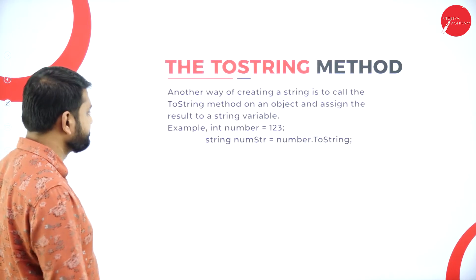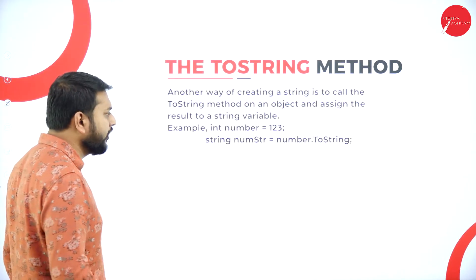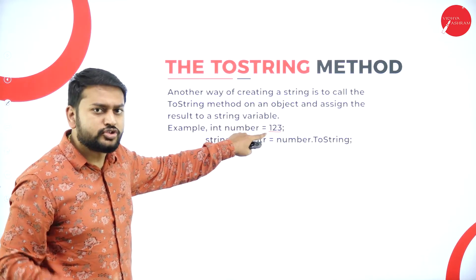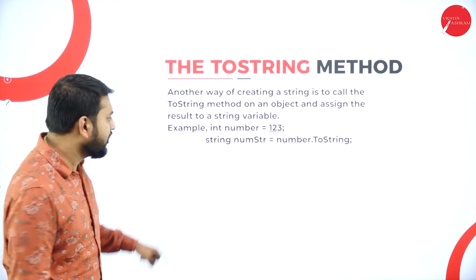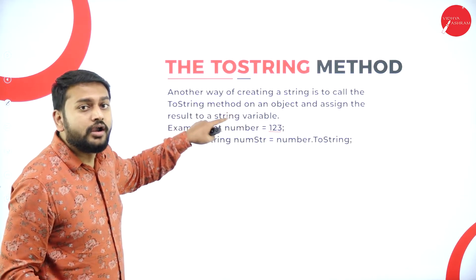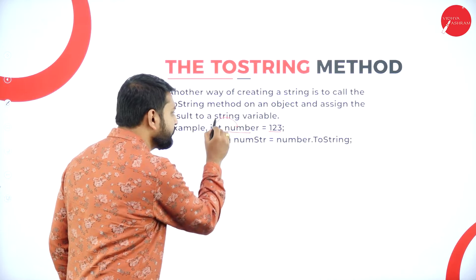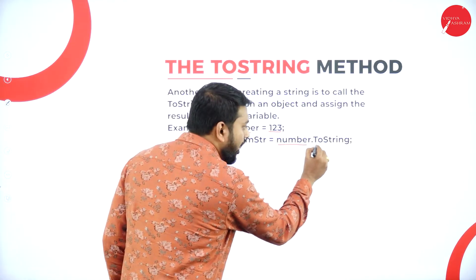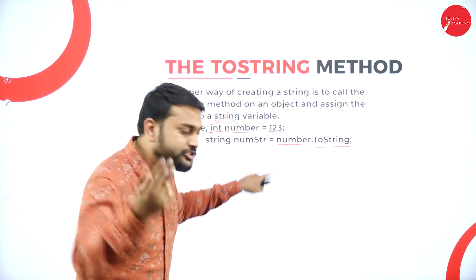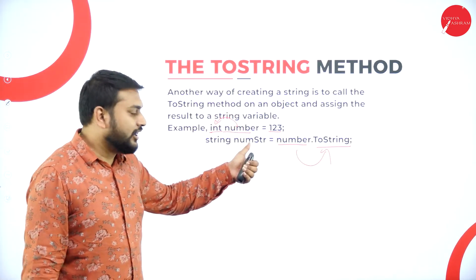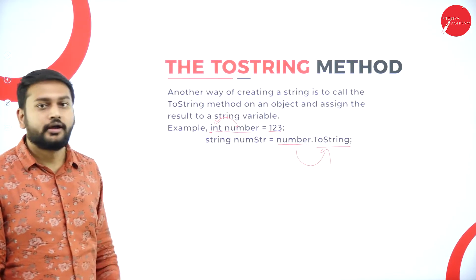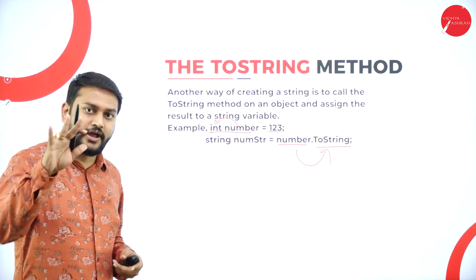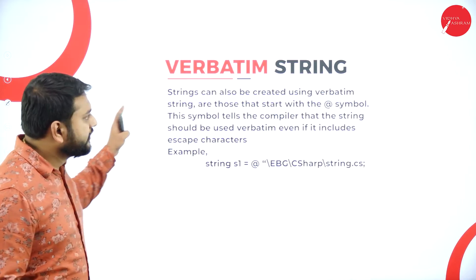The fifth method is converting other data types to string using ToString. For example, if you have a variable called 'number' of type integer containing 123, you call number.ToString() to convert it to a string and store it in 'numString'. This is how you convert values into a string — the fifth and final method for creating strings in C#.